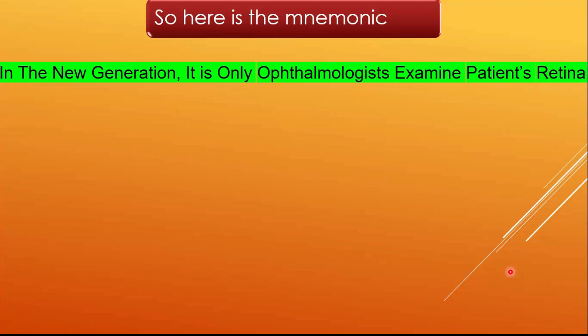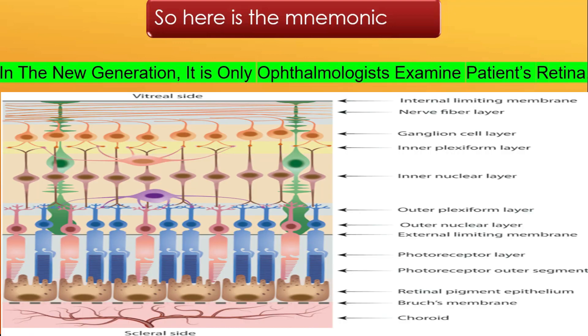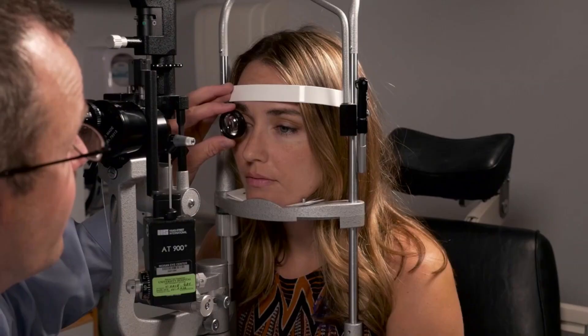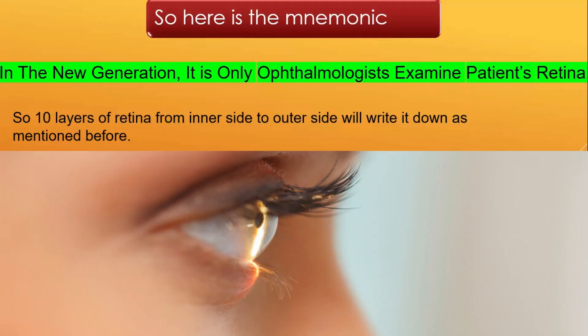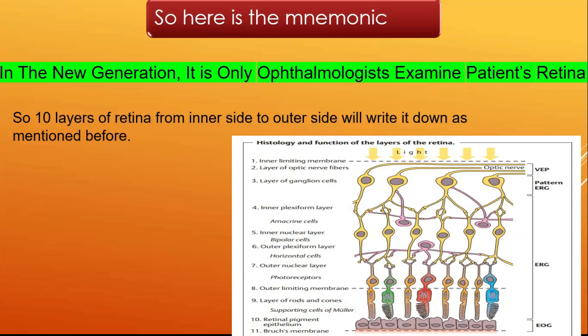So, here is the mnemonic. There are 10 layers of the retina. If you are finding it too difficult to remember them, you can remember it as: 'In the new generation, it is only ophthalmologists examine patient's retina.' So the 10 layers of the retina, from inner side to outer side, are written down as explained before. Let's come to the mnemonic.